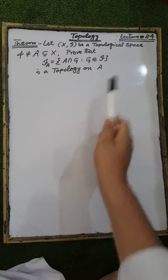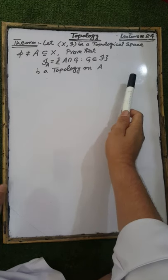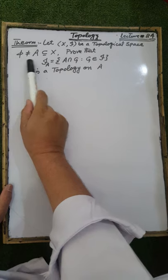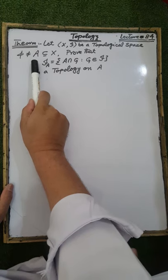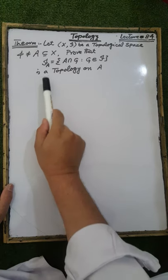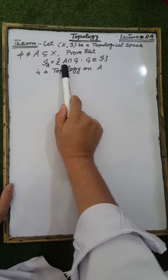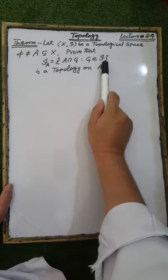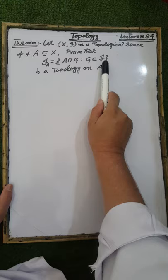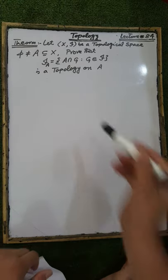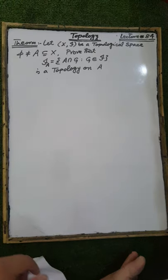Rahim Theorem, lecture number 83. Theorem: Let (X, τ) be a topological space and A be a non-empty subset of the ground set X. Prove that the collection τ_A, whose elements are of the form A ∩ G such that G is an open set in the topological space (X, τ), is a topology on the ground set A.